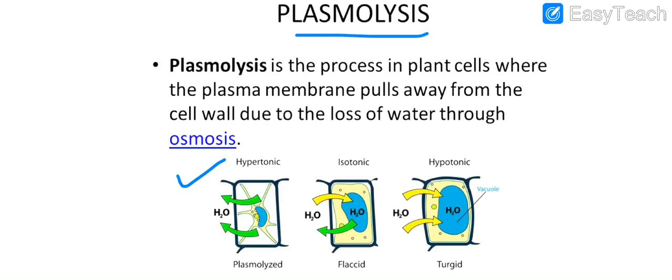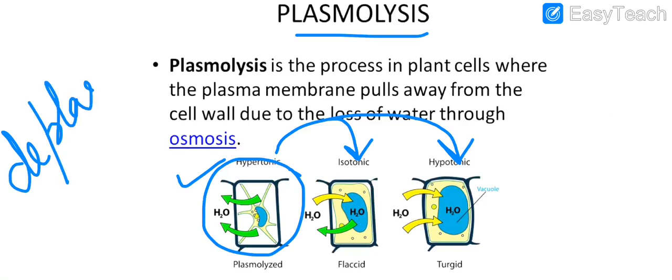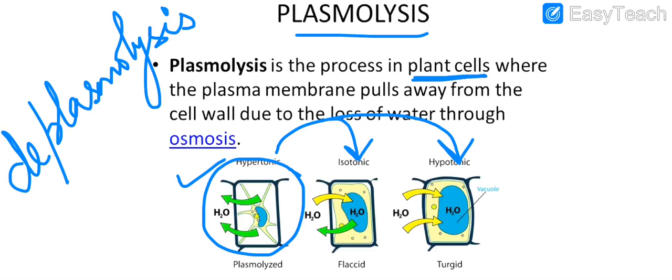This is plasmolysis. If you put the plasmolysed cell back into water, the plant cell will start regaining water, and that process is known as de-plasmolysis. Plasmolysis is defined as the process in plant cells where the plasma membrane pulls away from the cell wall due to loss of water through osmosis. This only takes place in plant cells, not animal cells.